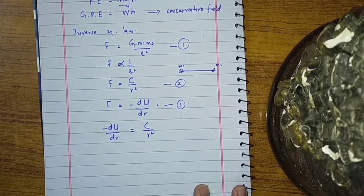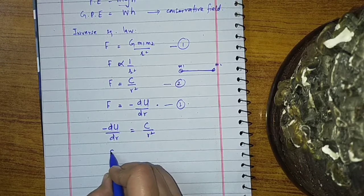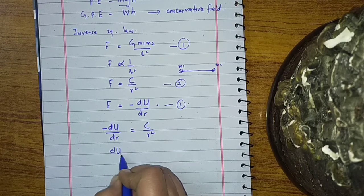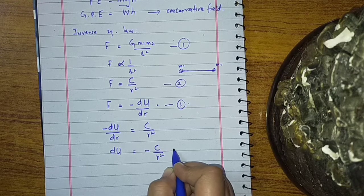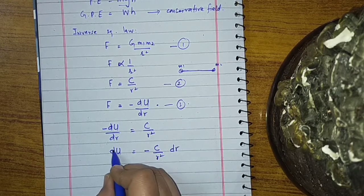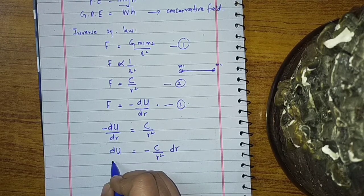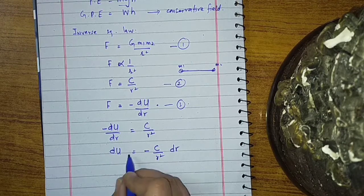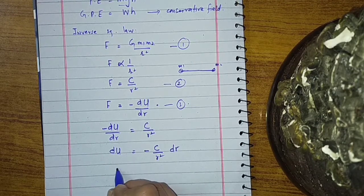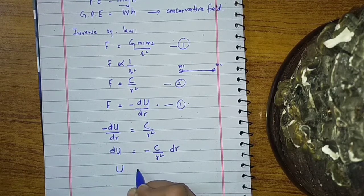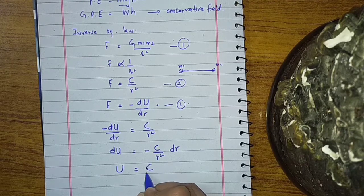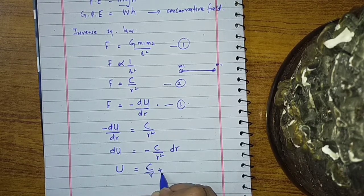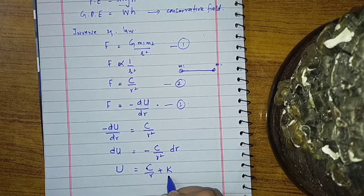If we want to solve it, we get dU equal to minus C over R squared times dR. We can remove the differential by taking the integral on both sides. When we integrate, the result is U equal to C over R plus K, where K is the constant of integration.